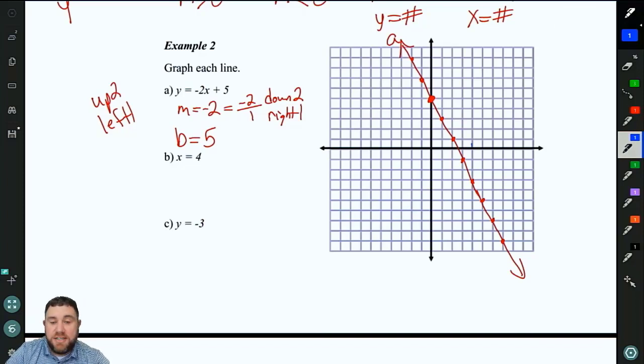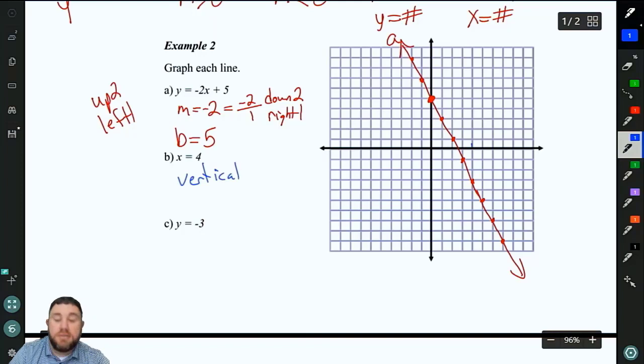For B, we've got x equals 4. Since it's x equals a number, we know that's going to be a vertical line through 4 on the x-axis. So we can put a point at 4 and then just draw our line. That will be line B.